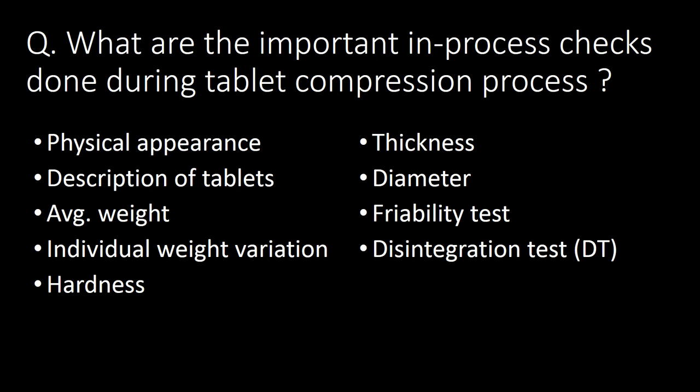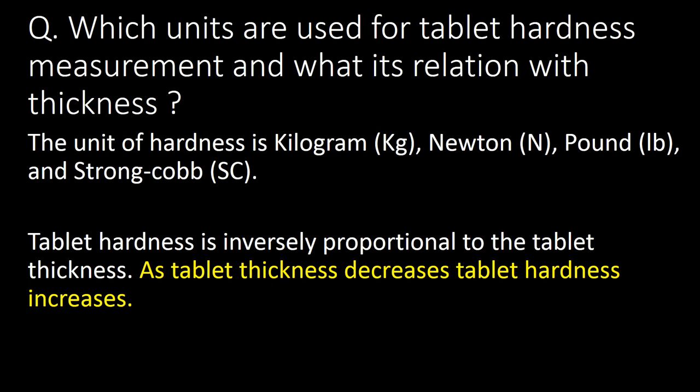What are the important in-process checks done during tablet compression? Nine important in-process checks are: (1) physical appearance, (2) description of tablets, (3) average weight, (4) individual weight variation, (5) hardness, (6) thickness, (7) diameter, (8) friability test, and (9) disintegration test (DT).